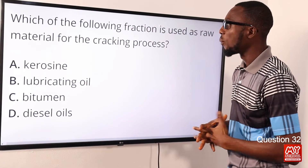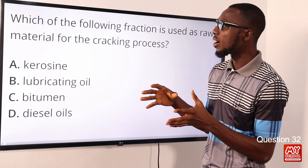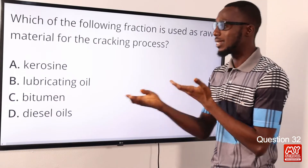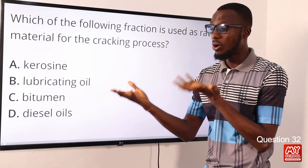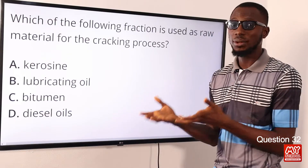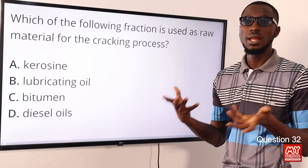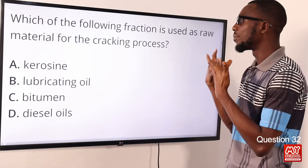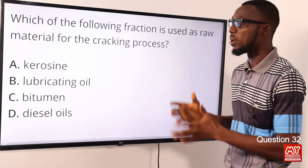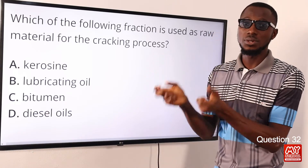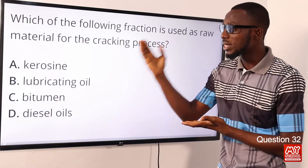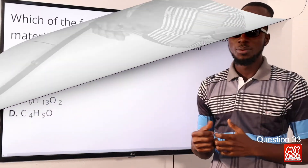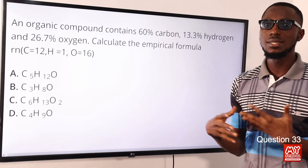Question 32: Which of the following fractions is used as raw material for the cracking process? That is diesel oil. Some textbooks refer to it as gas oil and diesel oil. This is useful for diesel engines and as raw material for the cracking process. From the options provided, diesel oil is the raw material for the cracking process, so option D is the correct option.